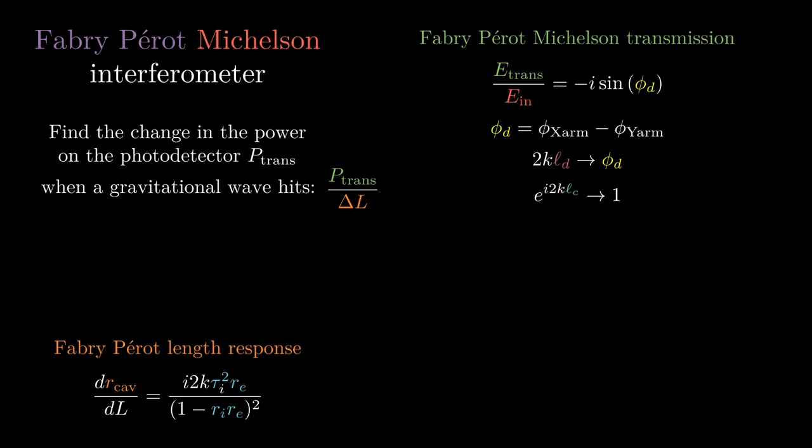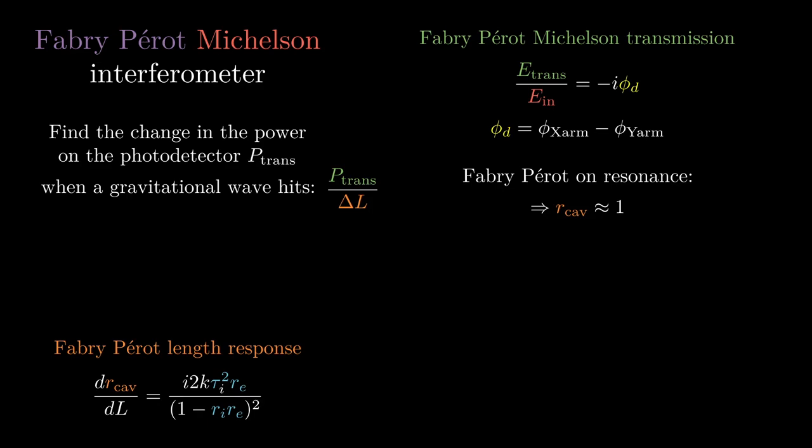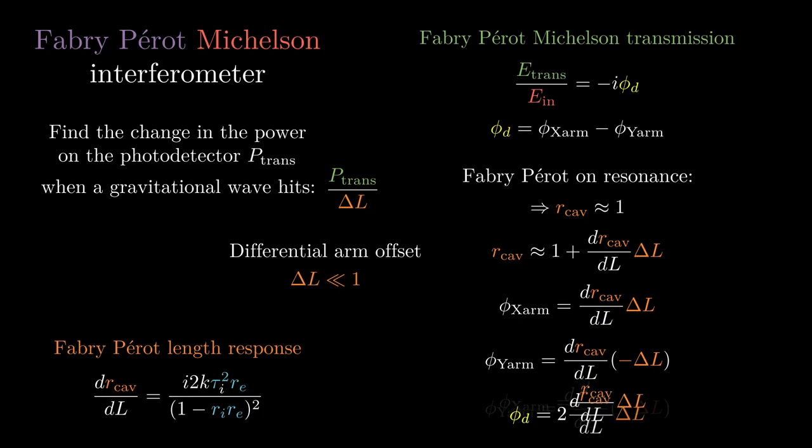But now what is the phase change of the arms phi x and phi y? Well we have a very tempting looking equation sitting right here but no let's justify it. First we note that the Fabry-Perot went on resonance and is about equal to 1. We also note that the Fabry-Perot length response is entirely imaginary. If we look at the Taylor expansion of the cavity reflection around resonance we'll see that any tiny differential arm offset delta l much much less than 1 will change the imaginary component of our cav which is essentially the same as making a phase change. So we can use the Fabry-Perot length response to describe the phase change in our arms and the overall differential phase.